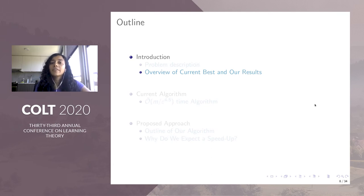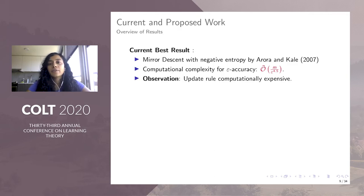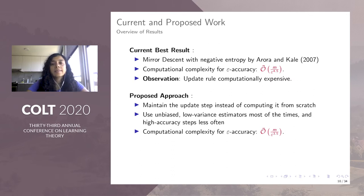We now give an overview of the current best and our results. The current best result for this problem is by Arora and Kali in 2007, where they use mirror descent with a negative entropy mirror map. Their computational complexity to obtain epsilon accuracy for this problem is M over epsilon to the 4.5. We would like to remark that this paper by Arora and Kali solves a much more general problem. Our observation in order to speed up this result was that the update rule in this algorithm is computationally expensive. And so what we do is that instead of performing this costly step in each iteration, we perform cheap steps, which are basically unbiased low variance estimators most of the times, and periodically offset the error accumulated over time using high accuracy steps which are costlier.